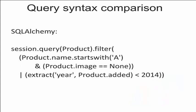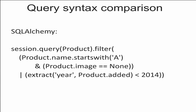In SQLAlchemy the same query will look this way. We get the session object and make the request to the Product class. In Pony we use the 'p' variable to apply conditions, but in SQLAlchemy we use the Product class itself. In order to get the year from the product's 'added' attribute, we need to use the extract function. Also we have to put part of our condition into parentheses to keep the precedence of bitwise operators. These queries are pretty similar in length, but we prefer the generator syntax because it's easier to remember — it is native Python syntax.